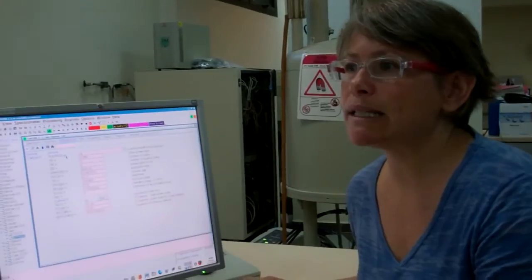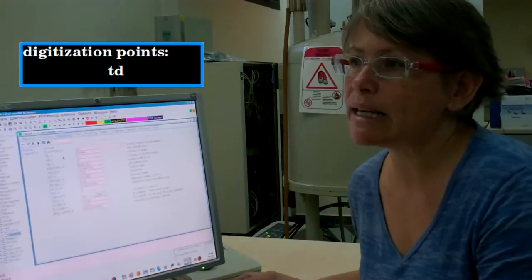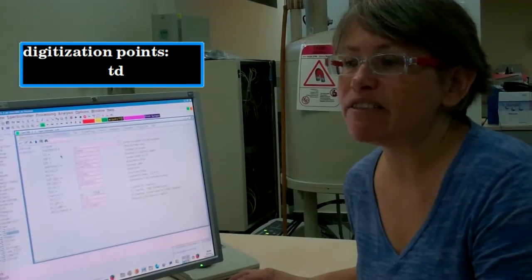The parameter in the table TD is the number of points used to digitize the FID. It is simply a number. It does not have any physical units.